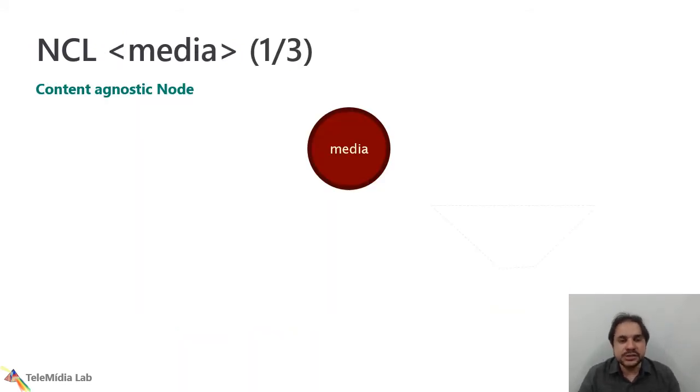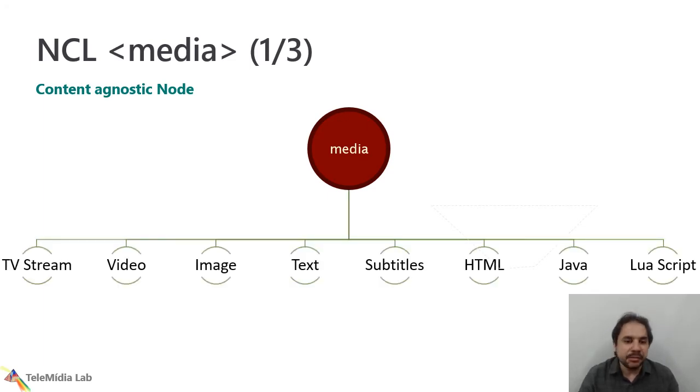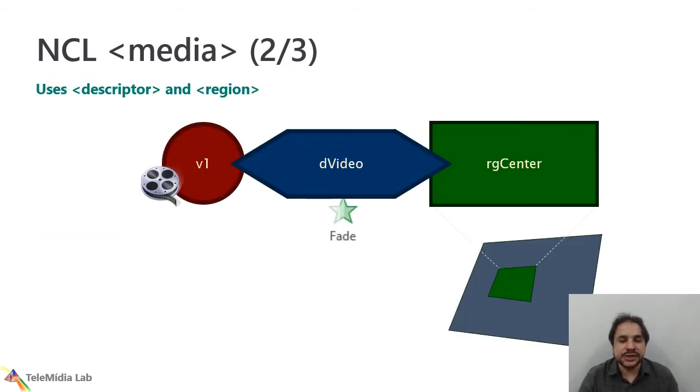The NCL media element consists of a content diagnostic node. What does it mean? It means that its content is not important for the multimedia presentation. It should be integrated easily in the presentation. For instance, it can be the TV streaming, a TV streaming video. It can be a video, an image, a text, subtitles, HTML content, even imperative content like Java and Lua scripts. It's used descriptors and regional elements to be presented. For instance, in this example here, we have a V1 video that has a descriptor D video. This descriptor informs to the player that when presented, it should have a fading effect. And then we have this RG center that defines the center of the region of the screen where the video should be presented.